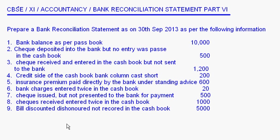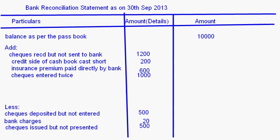Eighth: bills discounted dishonored, not recorded in the cash book. A bill discounted with the bank has been dishonored, so the bank balance decreases. It has not been recorded in the cash book, so the cash book balance is still more. This should be added. Bills discounted dishonored: 5000 rupees.